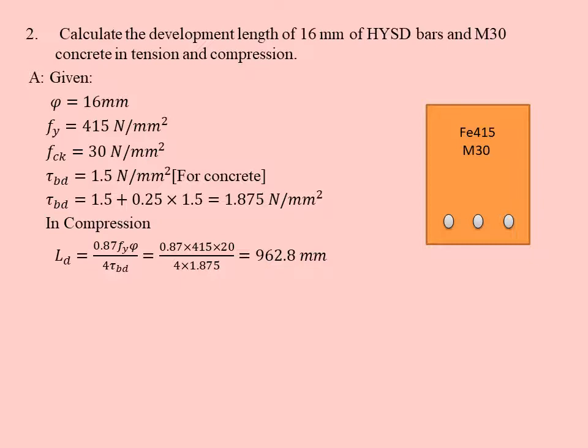Now in tension, LD = 0.87 × fy × φ / (4 × τbd). Here the nominal bond stress in tension is directly given to us in the code, that is 1.5. So we substitute 1.5 here and we get the development length in tension as 1,203.5 mm.